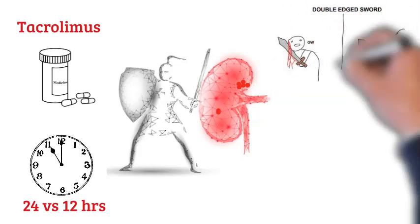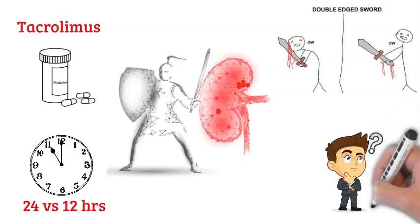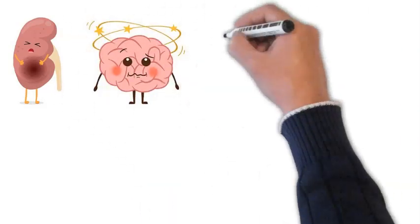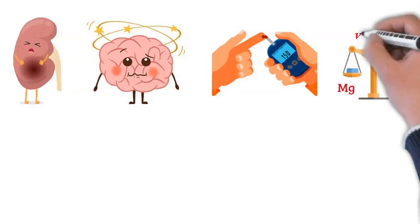While it does its job very well, it's a double-edged sword that we must closely monitor. What does that mean? It can be toxic to the kidneys, causing neurological symptoms, make blood sugar difficult to control, and cause abnormalities with minerals and acids in the bloodstream.